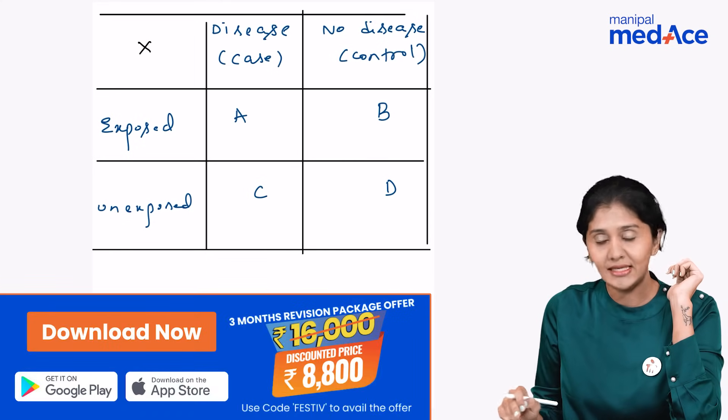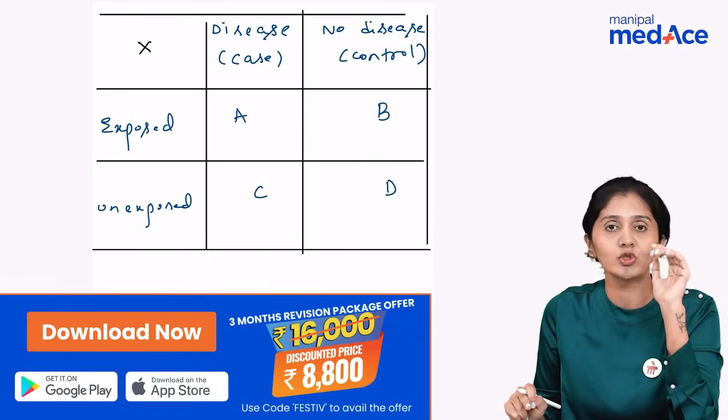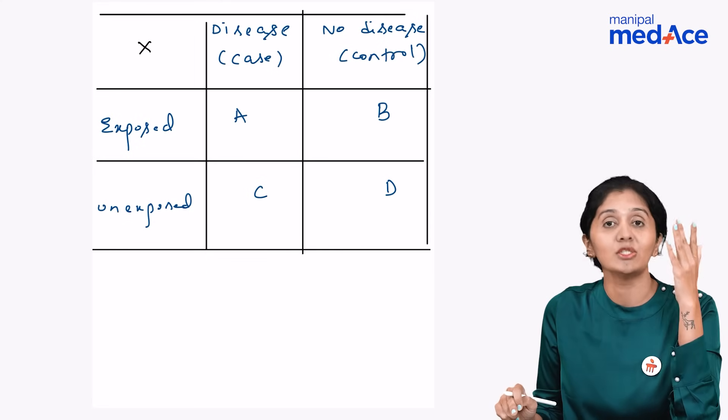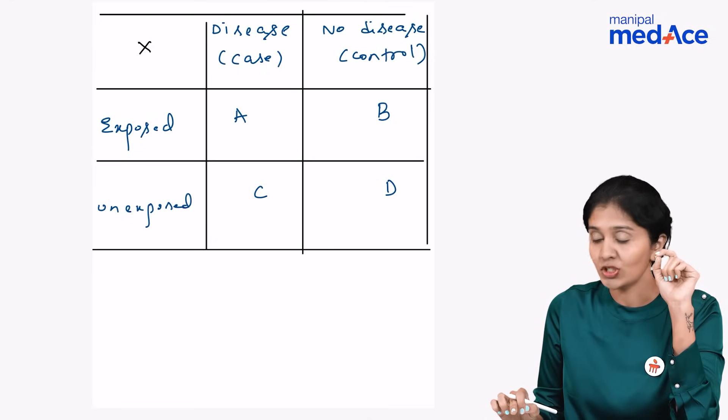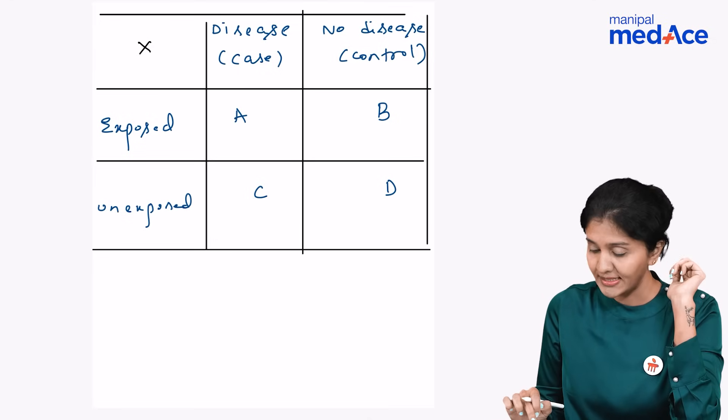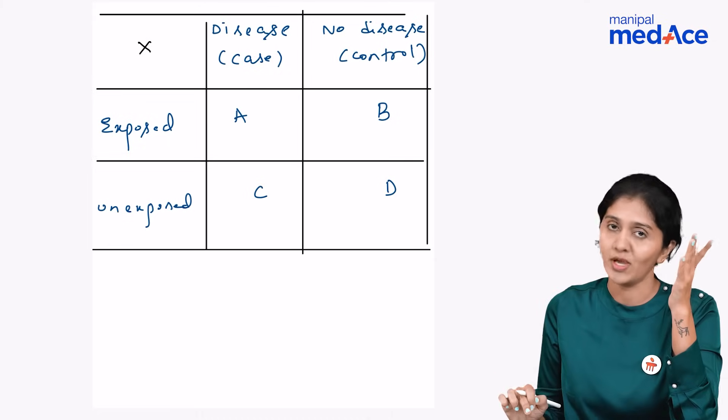We have four different cells here A, B, C, D. A is where there is both exposure plus disease, D where there is no exposure as well as disease, and B is exposure is present but there is no disease, and C is there is disease but there is no exposure.